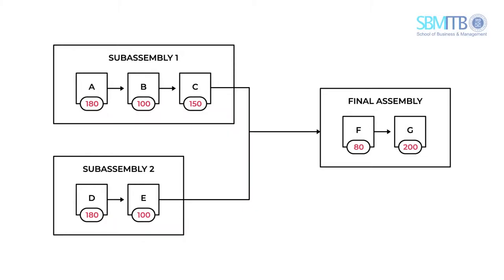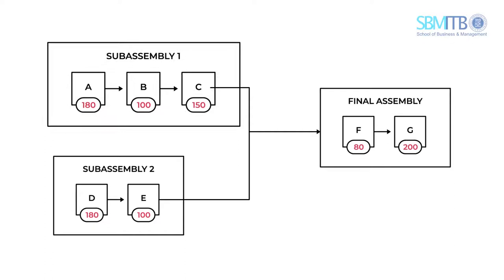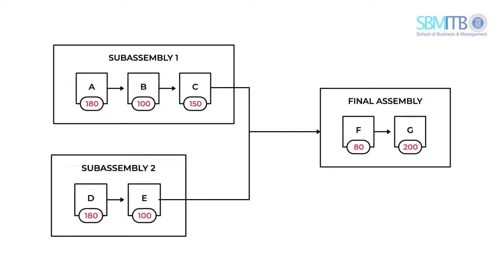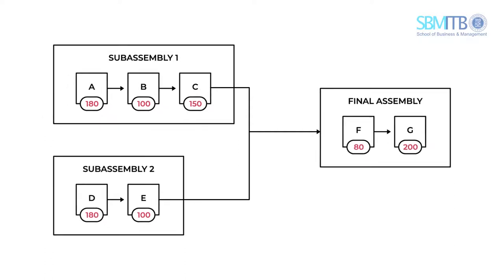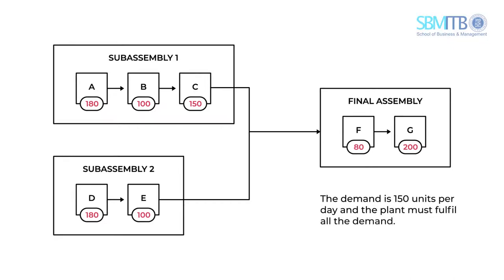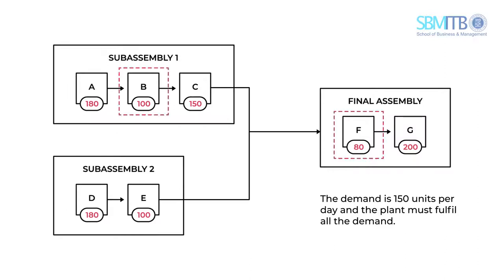Let's look at an example. Assume we have a factory process as shown in this figure. The manufacturing is divided into three parts: Subassembly 1, Subassembly 2, and Final Assembly. Each machine resource is displayed in red. The demand is 150 units per day and the plant must fulfill all the demand. Based on the definition, there are two bottlenecks, B and F, because B limits capacity to 100 and F limits capacity to 80.